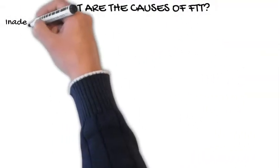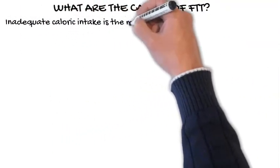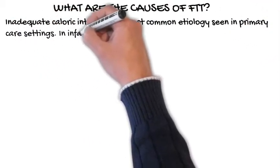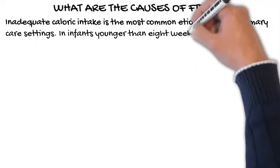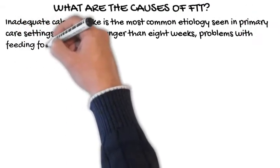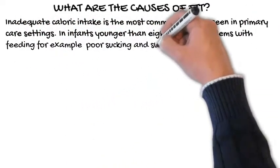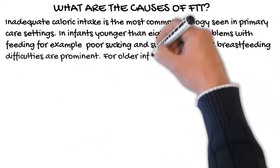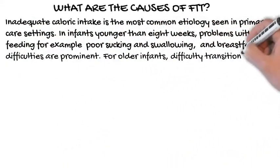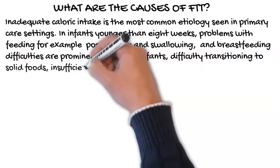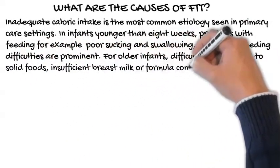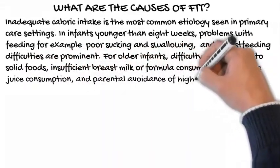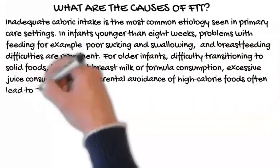What are the causes of FTT? Inadequate caloric intake is the most common etiology seen in primary care settings. In infants younger than 8 weeks, problems with feeding — e.g., poor sucking and swallowing, and breastfeeding difficulties — are prominent. For older infants, difficulty transitioning to solid foods, insufficient breast milk or formula consumption, excessive juice consumption, and parental avoidance of high-calorie foods often lead to FTT.